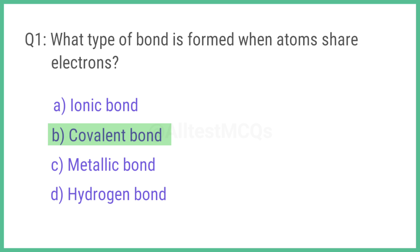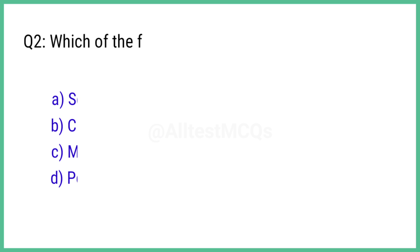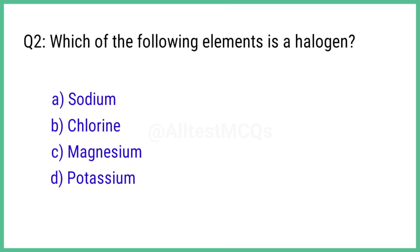Question number 2. Which of the following elements is a halogen? The right answer is option B: Chlorine.